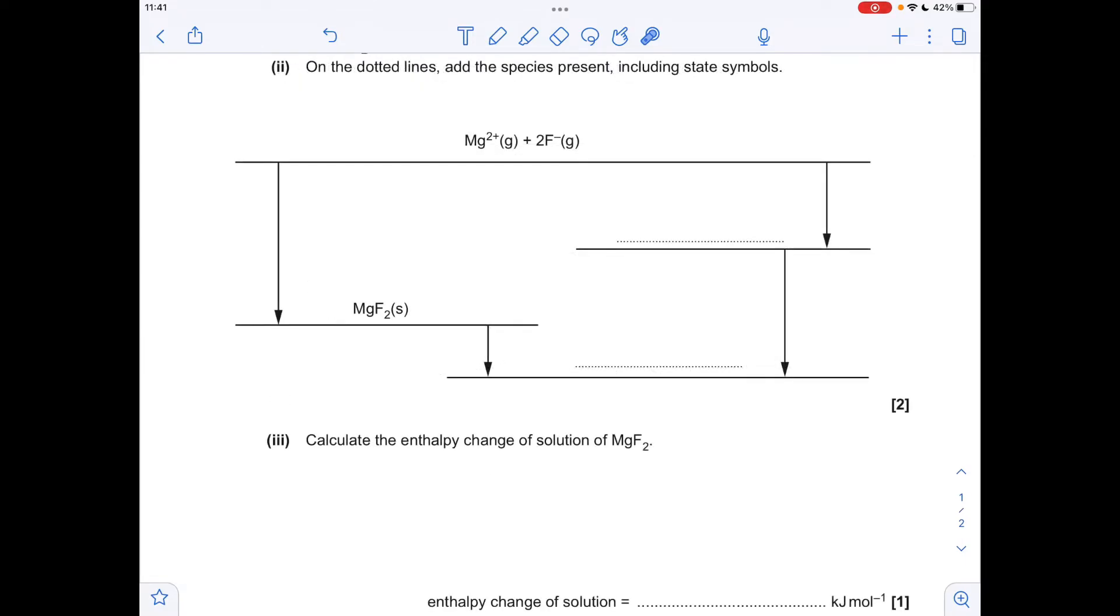Next part of the question, we've got to add the formulae of the species present on these dotted lines, not forgetting state symbols. I'm going to add some extra information as well. I'm going to talk about what the enthalpy changes are because that will help when it comes to the calculation. So starting with this enthalpy change here, this is the enthalpy change of solution for the magnesium fluoride. So on this line we need a mole of Mg2+ aqueous and two moles of F- aqueous.